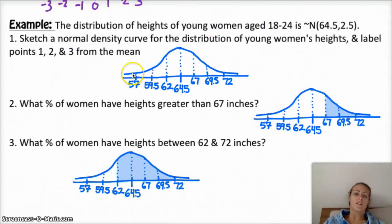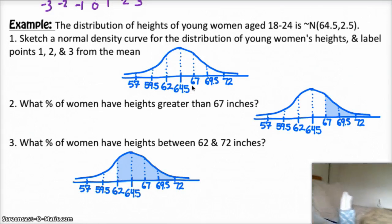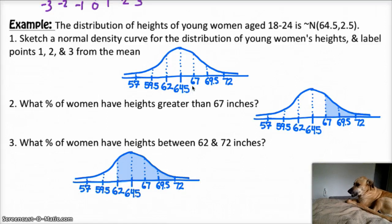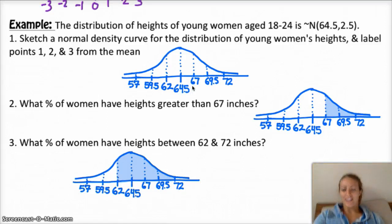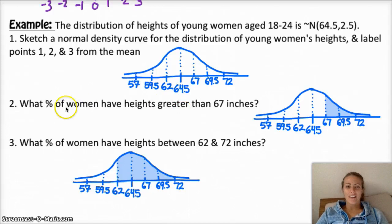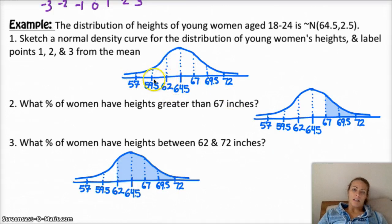Okay, so to answer these questions, so 1 is just sketching the curve. So your mean is 64.5. You add 2.5 to each. Hello, what are you doing here? Hi, dog. Hi, Kyra. Hello. Hi, Kyra. Hello. She's very cute. She wants to snuggle. Anyways, so you would want to use the empirical rule to do 2 and 3. And I got these points by adding the standard deviation to each one or subtracting on the left side.